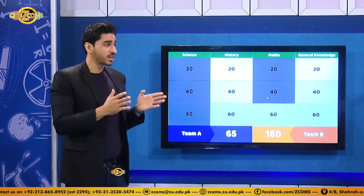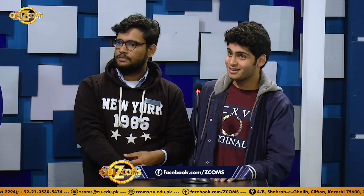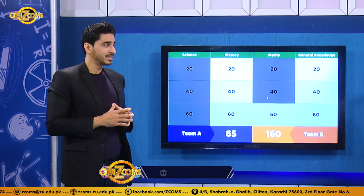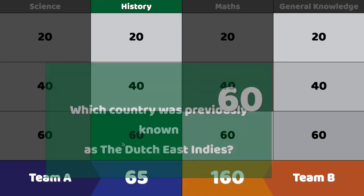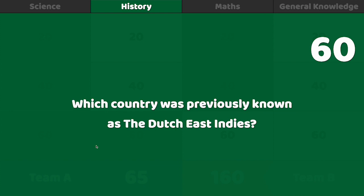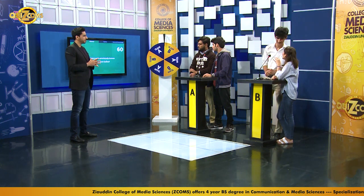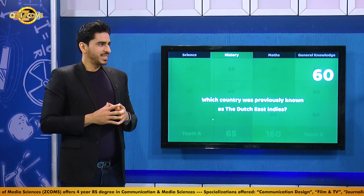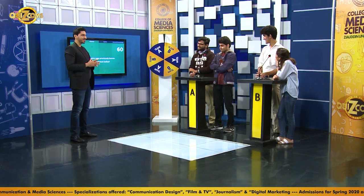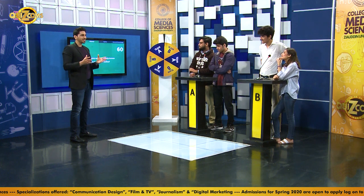Before the last question of the round, Team A says they're still confident despite being 95 points behind. The host urges them to think carefully about which question the other team may not know. The question chosen is history for 60: which country was previously known as the Dutch East Indies? Both teams are stumped and no one buzzes. Team A considers taking a risk but decides to save it. The correct answer is Indonesia.